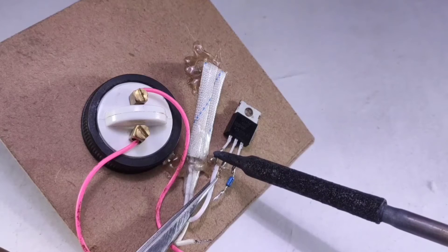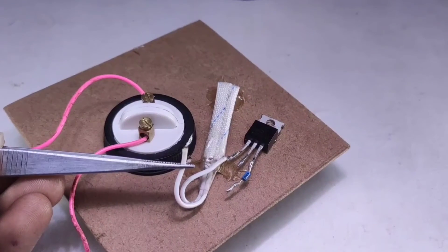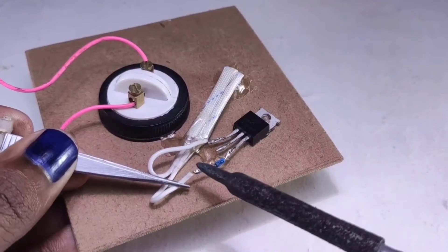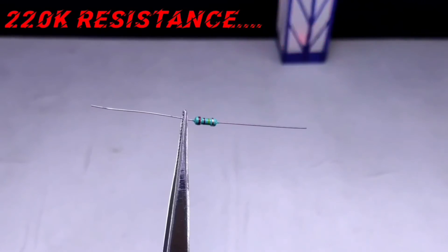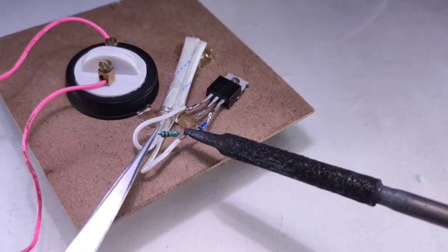I will solder another wire from the LDR to the MPT pin of the DB3 diac. Now I am taking a 220k resistance. I solder the resistor like this.